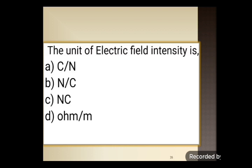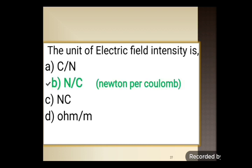Next question: the unit of electric field intensity is — option A: Coulomb per Newton, option B: Newton per Coulomb, option C: Newton per Coulomb, option D: ohm per meter. The correct unit of electric field intensity is Newton per Coulomb. So option B is the correct answer.